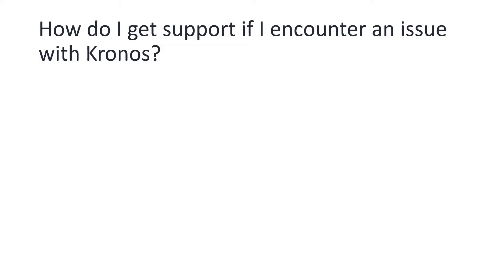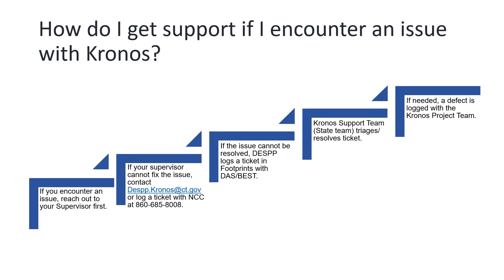How do I get support if I encounter an issue with Kronos? This is an escalation chart of what to do if you encounter a problem. The first thing to do is reach out to your supervisor, who should then reach out to us at desp.kronos.ct.gov or the network control center for technology-related issues. If the issue cannot be resolved by DESP, it will be handled by logging a Footprints ticket that is forwarded to DAS and the state Kronos team. As a last resort, we can always have Kronos itself help us with any issues.